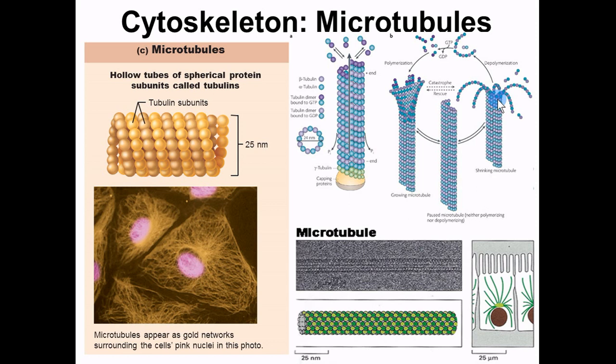If you Google 'inner life of the cell' in quotes, it'll pull up animations made by Harvard that show all these structures animated, including how microtubules come together and peel apart when ready to rearrange. If a cell wants to reach out, it can rearrange these microtubules and project outward — almost like if you needed a third arm, you could just grow one, and when you're done, bring it back in.